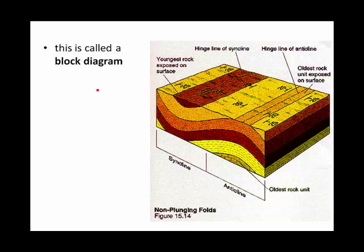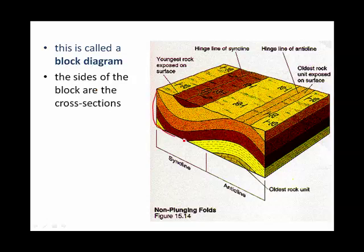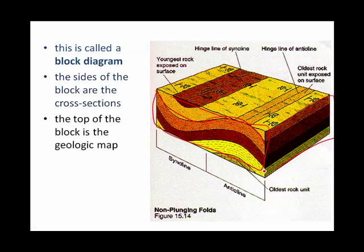Here we have what's known as a block diagram because it looks like a block. The sides of the block diagrams are cross-sections. This cross-section here shows us a clear syncline and an anticline. The other side doesn't show that it's a syncline and an anticline, so not all cross-sections will give you the exact same information.